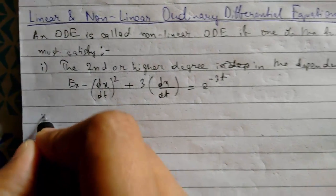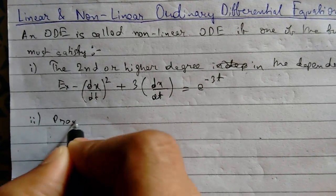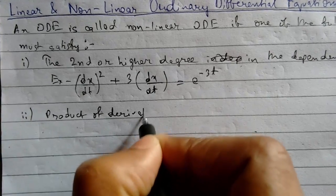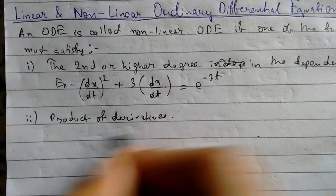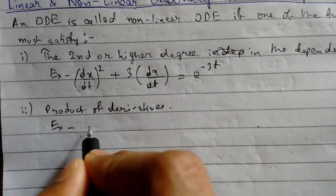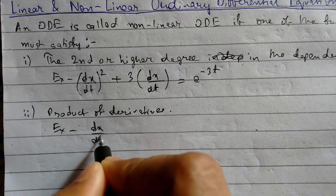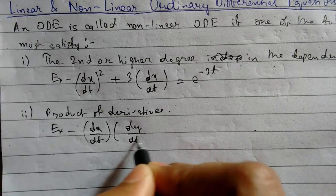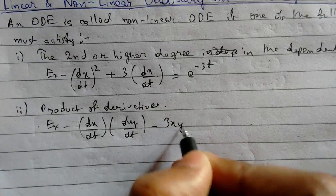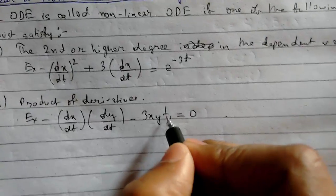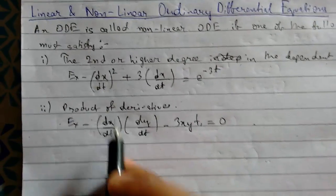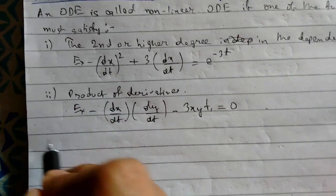Condition two: product of derivatives. For example, dx/dt times dy/dt minus 3x — something like this. If there is a product of derivatives, then it is nonlinear.